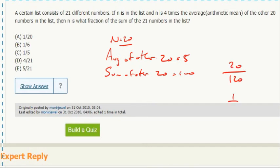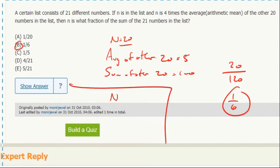You could also algebraically say, okay, n is four times the average of the other 20.